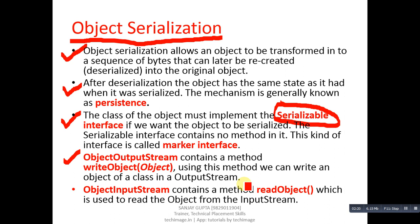ObjectInputStream is also a class which contains a method readObject, used to read the object from the input stream. If you want to read back an object stored inside a file, you have to create an object of ObjectInputStream and use the readObject method.